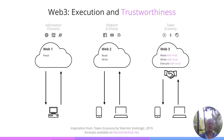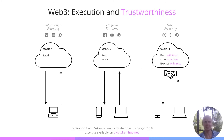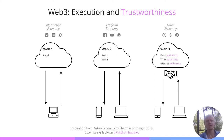Coming back to the Web1/Web2/Web3 illustration — Web3 is not only about read, write, and execution, but most importantly what changes is the nature of the data itself. Now data on these networks verifies open and transparent rules embedded in the networks. What changes is the trustworthiness of data.